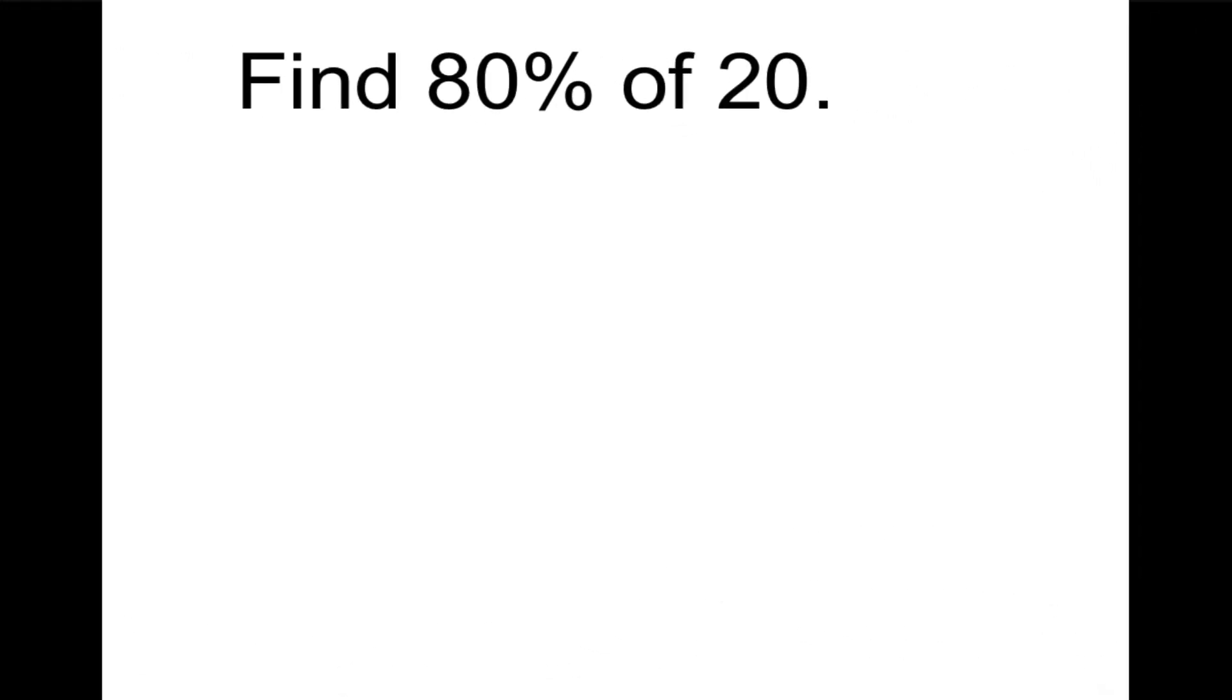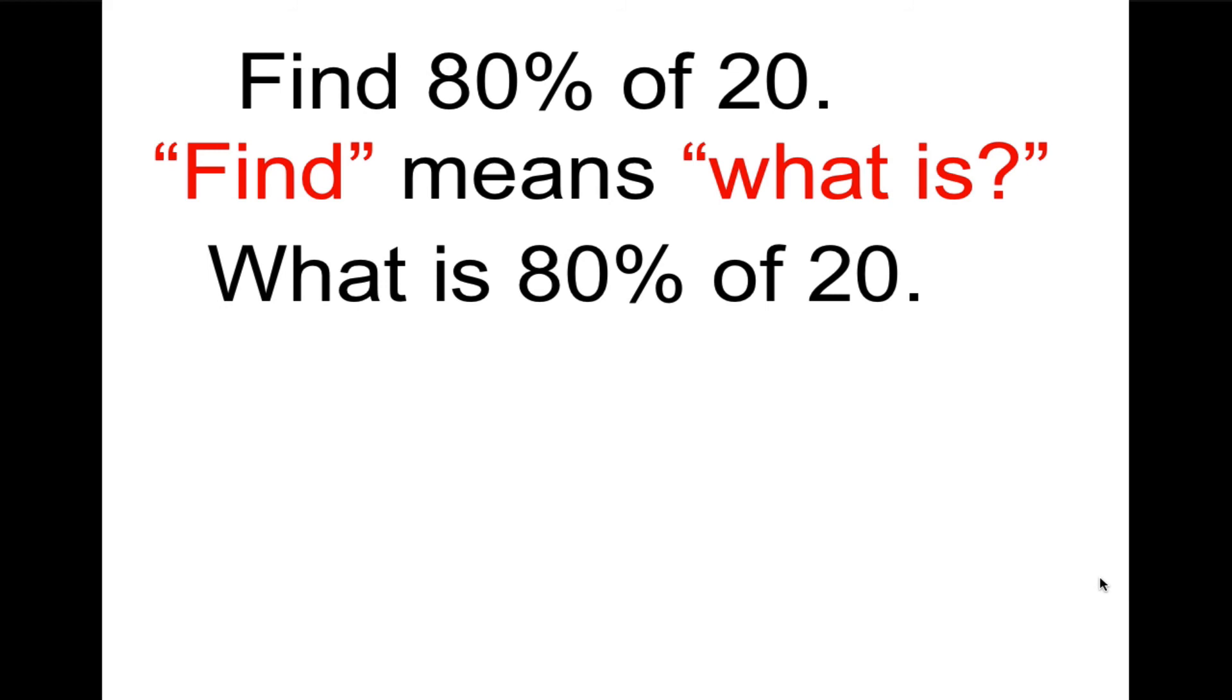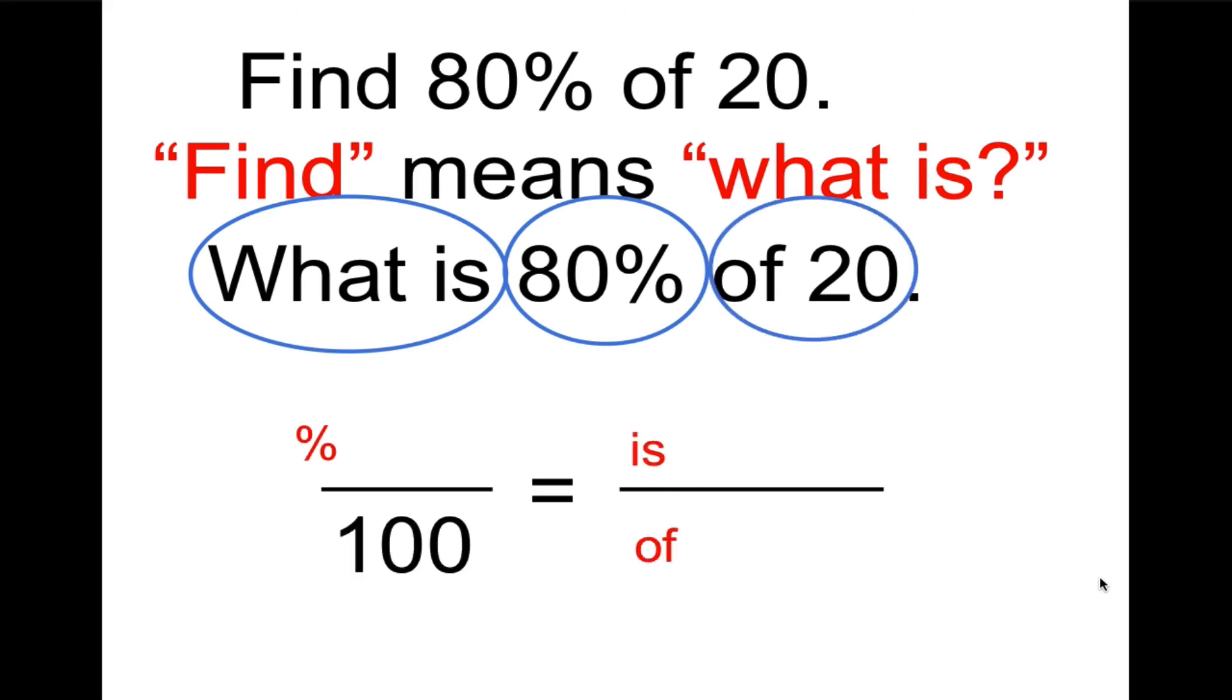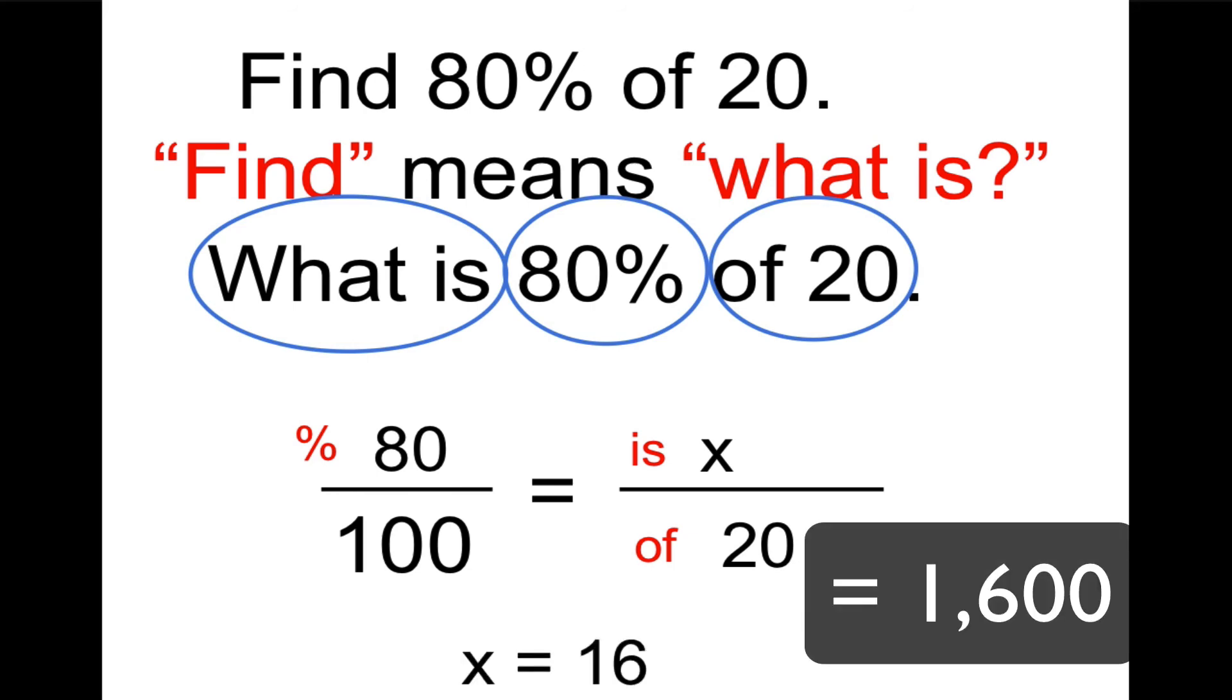In our next example, we want to find 80% of 20. At first glance, this appears to have only two of the three pieces that we need to hang on our frame. But if you realize that find means what is, now we have our variable. The missing part is the part, and we're given the percent and the whole. So we can think of this as what is 80% of 20? The is is the missing piece. The percent is 80, and the whole is 20. So 8 times 2 is 16. This would be 1,600 divided by 100. So X is 16.